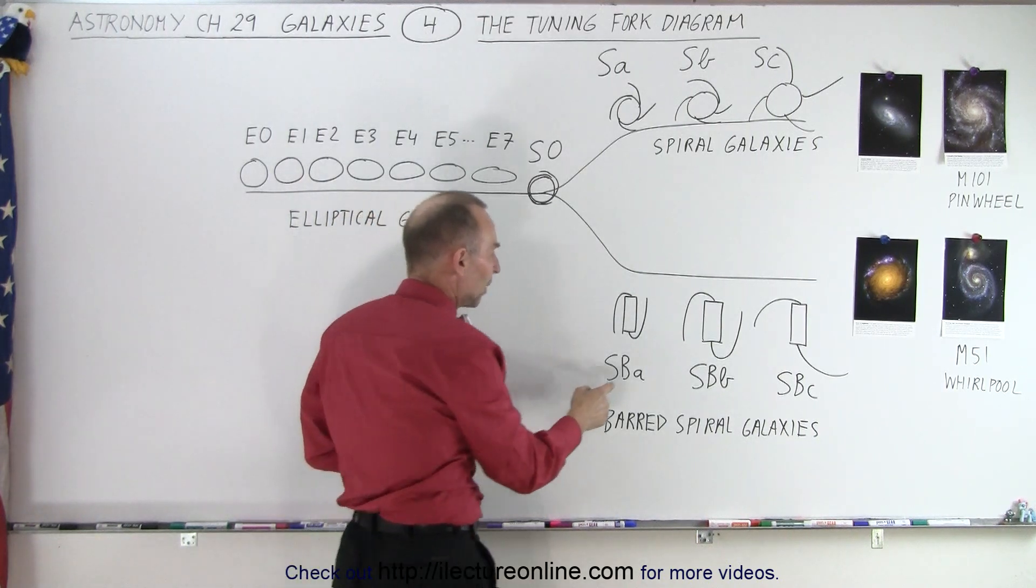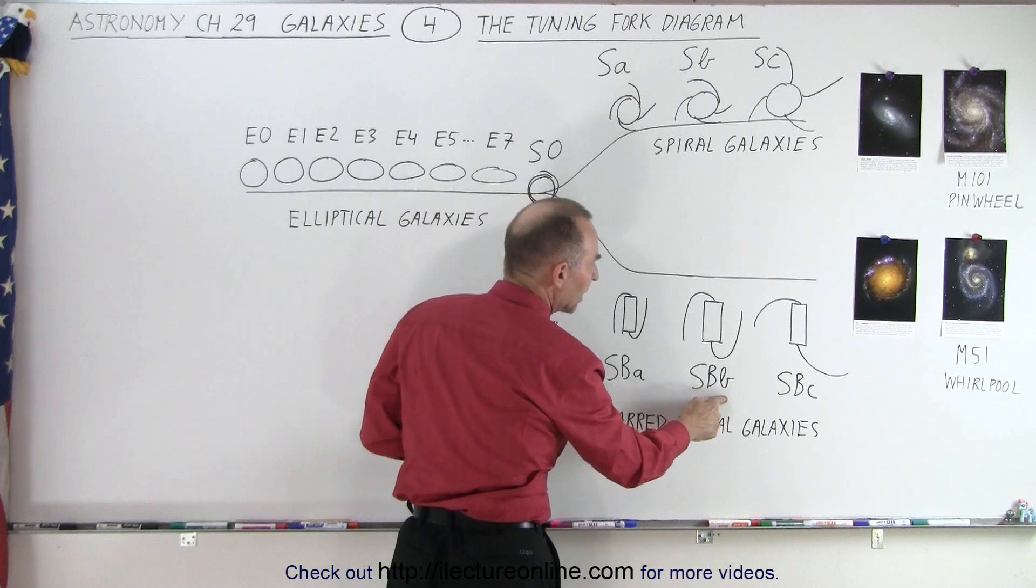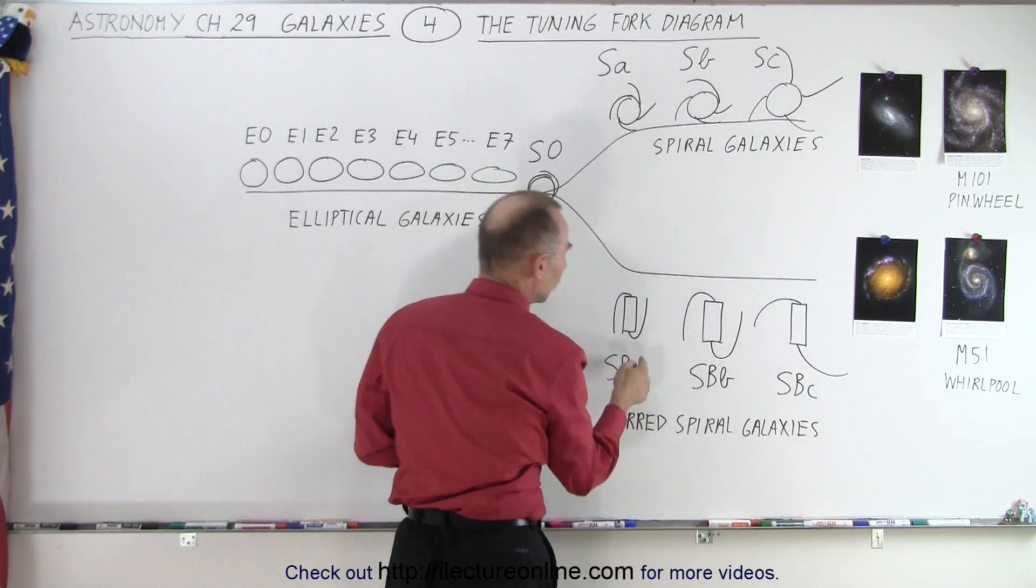Same for the barred spiral galaxies: spiral barred A, spiral barred B, and spiral barred C. Notice for the spiral barred A the arms are very close together, for B they're a little bit further out, and for C they're very far out.